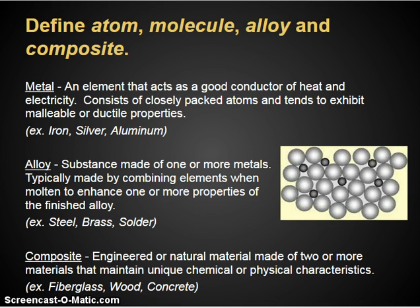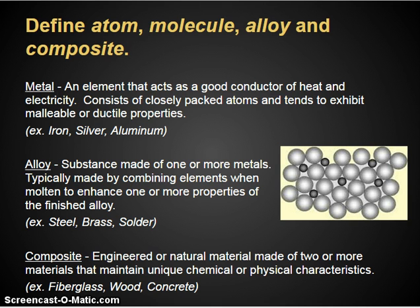An alloy is a substance that's made of one or more metals — basically a mixture of a metal and another metal, or a metal and something else. Typically made by combining elements when molten to enhance one or more properties of the finished alloy. For example, steel is a combination of iron and carbon and other materials. Other alloys would be brass and solder. Most aluminums — and there are thousands of different types — are all alloys.